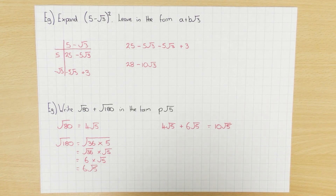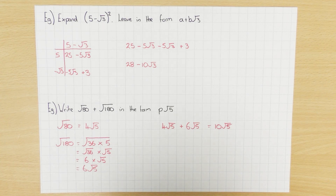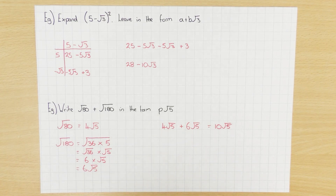Hopefully those extra examples make surds a bit easier to understand. Essentially you're just looking for square numbers inside the surd to try and simplify it. Have a go at some questions and see how you get on. Hopefully that helps, guys. Thanks for watching.